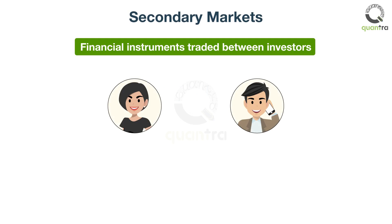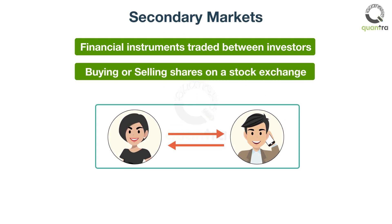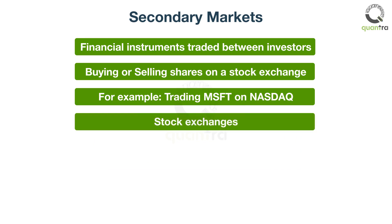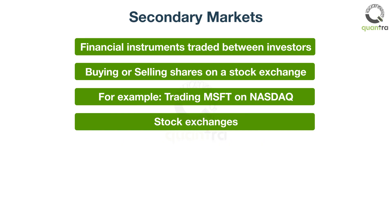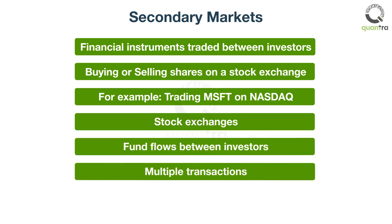Now let's understand what secondary markets are. The secondary market is a type of market where listed shares and other financial instruments are traded amongst investors. In other words, the shares you buy or sell on a stock exchange are transacted in the secondary market. For example, if you go to buy the stock of Microsoft on NASDAQ, you are dealing with another investor who owns shares of Microsoft Company. Any major stock exchange can be regarded as the secondary market. Unlike the primary market, the secondary market does not provide funding to corporations. It enables fund flows between investors. You can perform multiple transactions in the secondary markets.